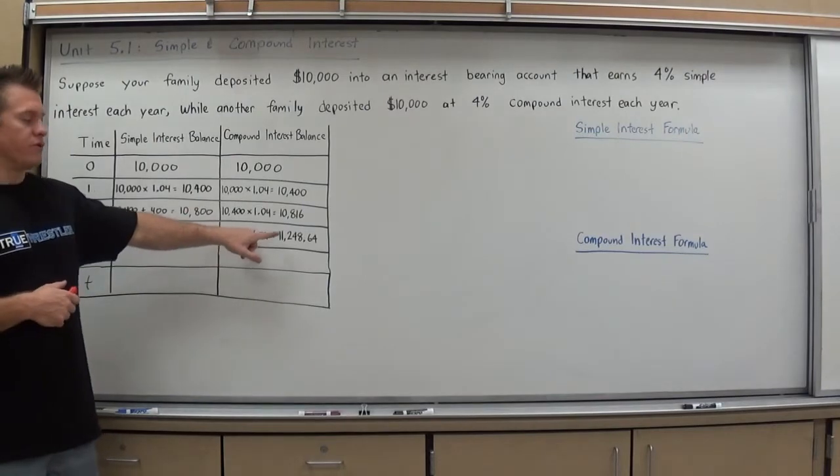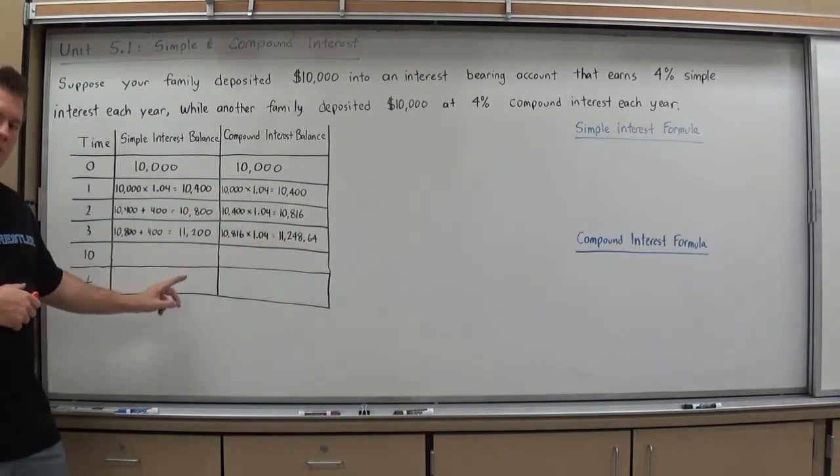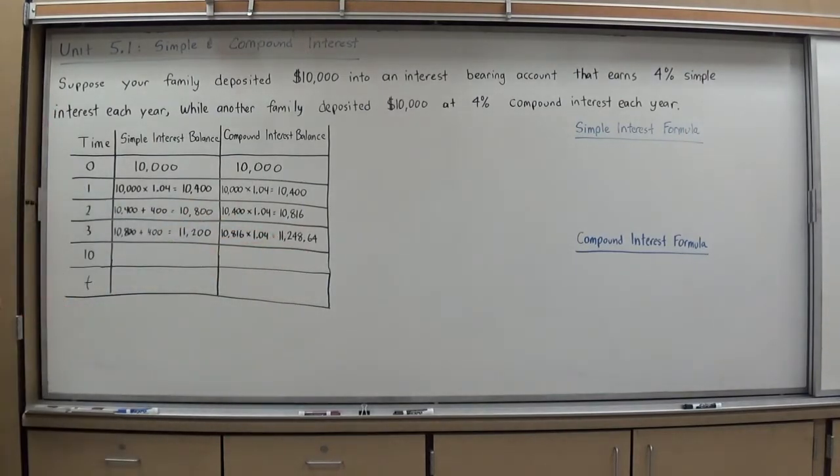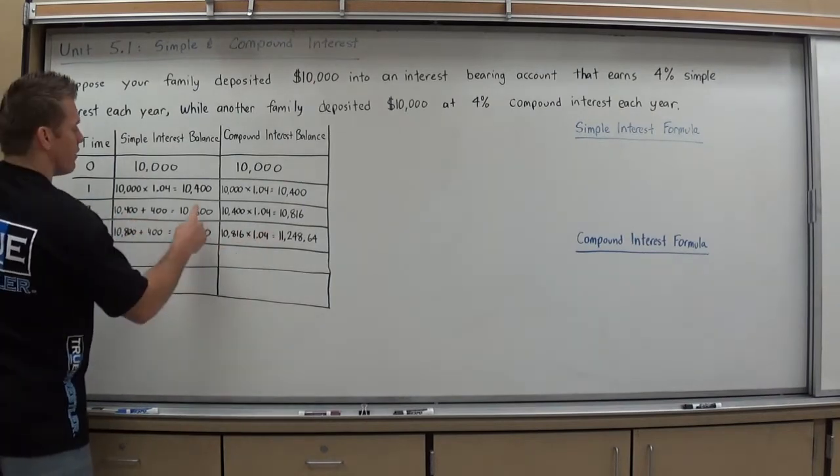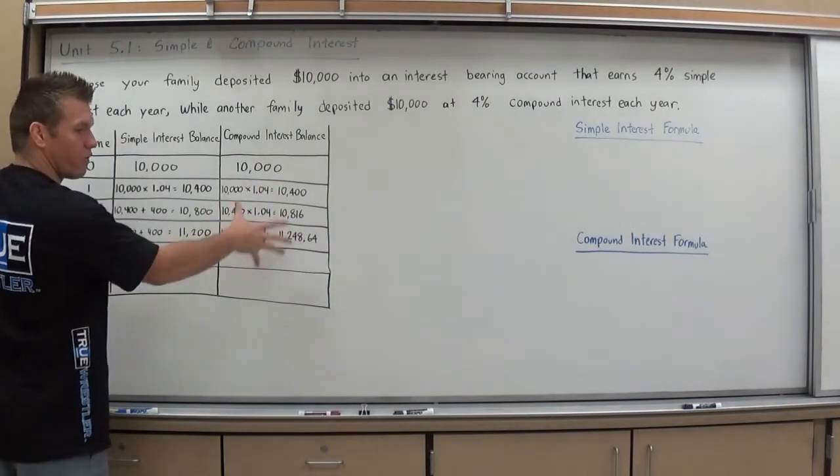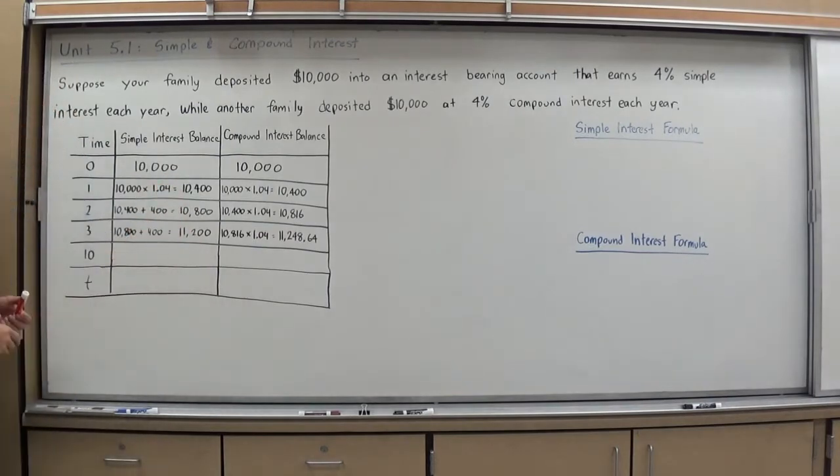So now I use $10,400 times 1.04, get an amount. Take that amount, times 1.04, get an amount. Take that amount, times 1.04. We can already see that the compound interest formula is a little more favorable. It's earning a little bit more money than the simple interest formula is. What we want to do is see exactly how, and maybe try to even come up with a nice formula for how this works.